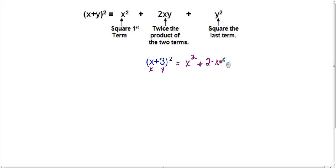So 2 times x times 3, plus y squared. Y is 3, so that's 3 squared. Now I just need to do a little bit of simplifying here in the middle. So we have x squared plus 2 times x times 3, 2 times 3 is 6, so that's 6x, and then 3 squared is 9.